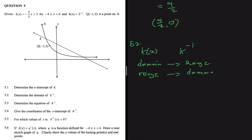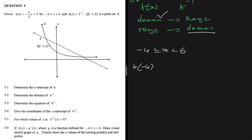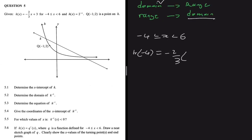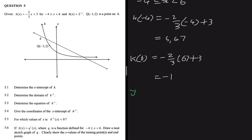We're given the domain of k of x, but we need the domain of k inverse. So let's use the domain of k of x to find the range of k of x, because the range of k of x will be the domain of k inverse. The domain of k of x has x between minus 4 and 6. We calculate: k of minus 4 equals minus 2 divided by 3 multiplied by minus 4 plus 3, which gives 5.67. And k of 6 equals minus 2 divided by 3 multiplied by 6 plus 3, which gives minus 1.